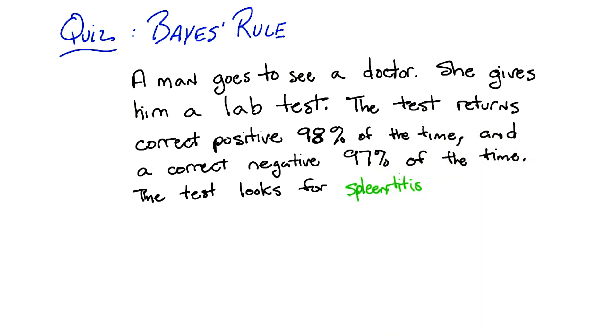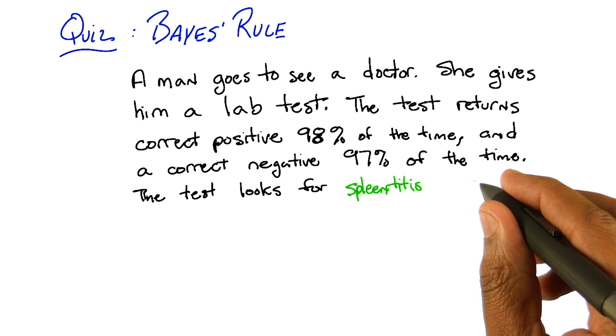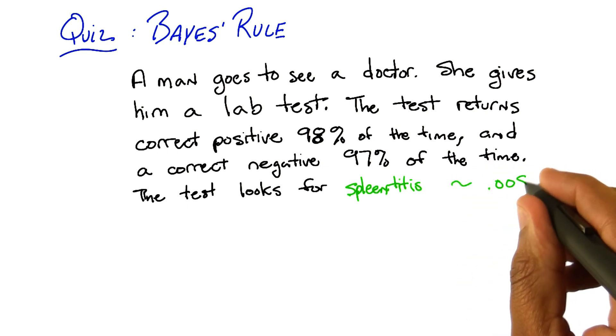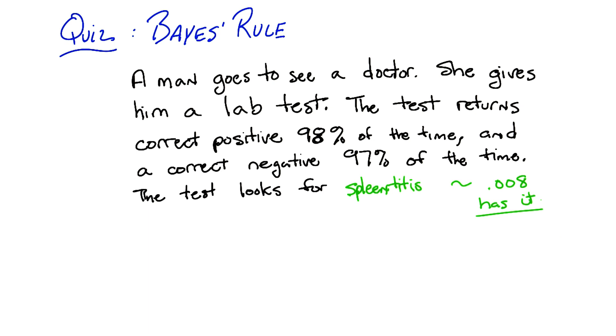Now, spleen titus is such a rare disease that nobody's ever heard of it. And it turns out that it's so rare that only about this fraction of the population has it. That make sense? So we're looking for spleen titus. It's a very rare disease, but this test is really good at determining whether you have it or determining whether you don't have it.